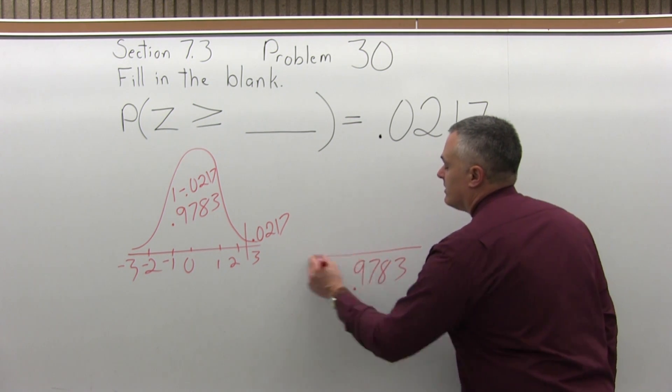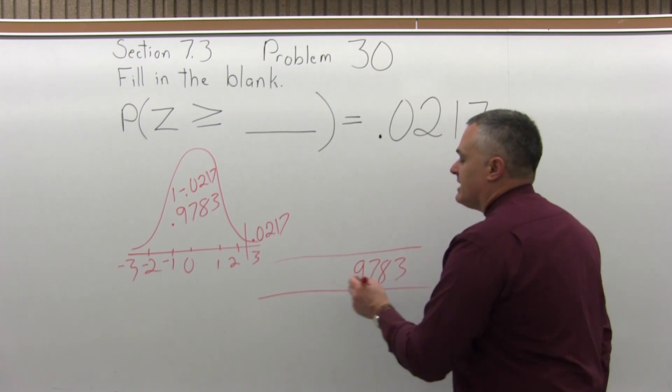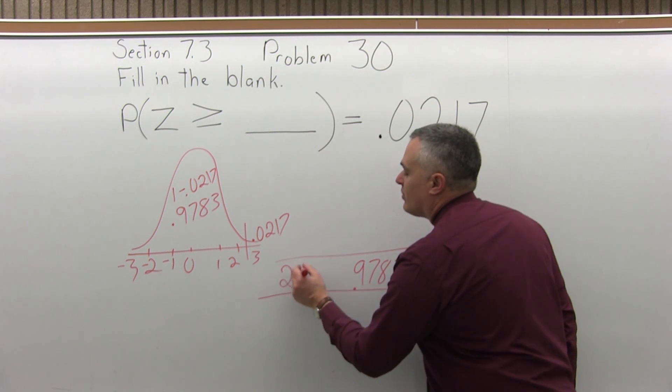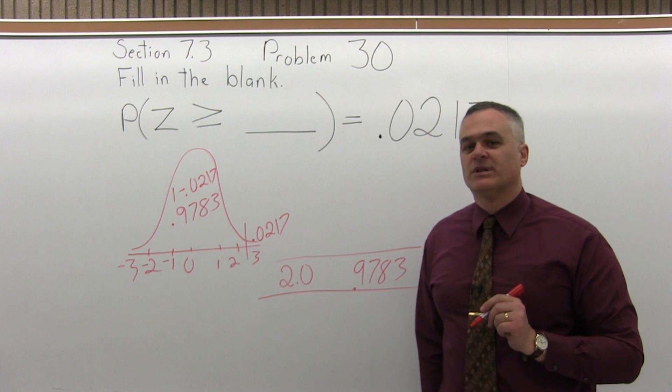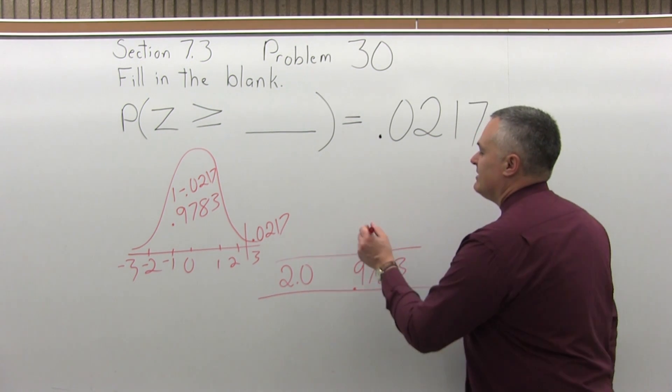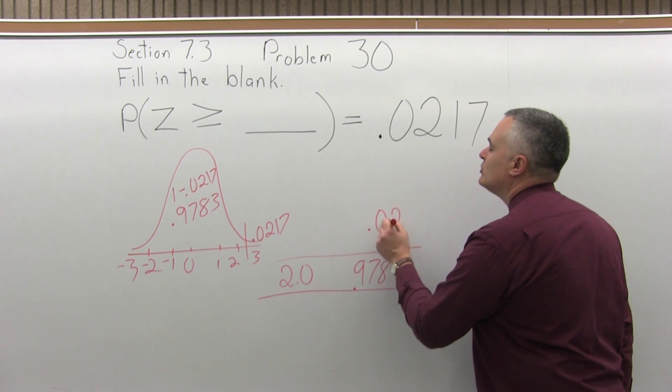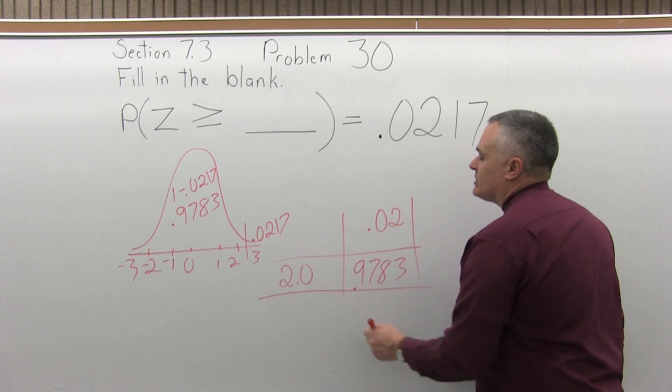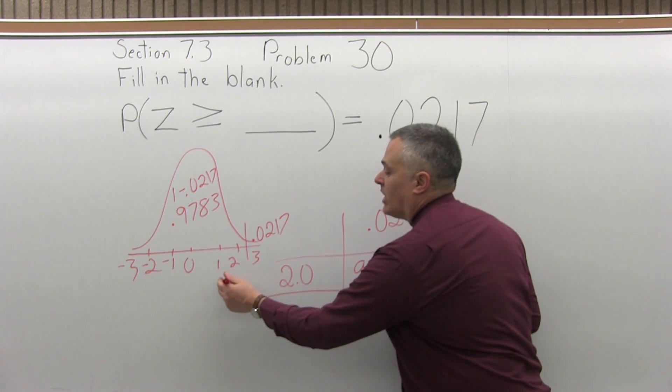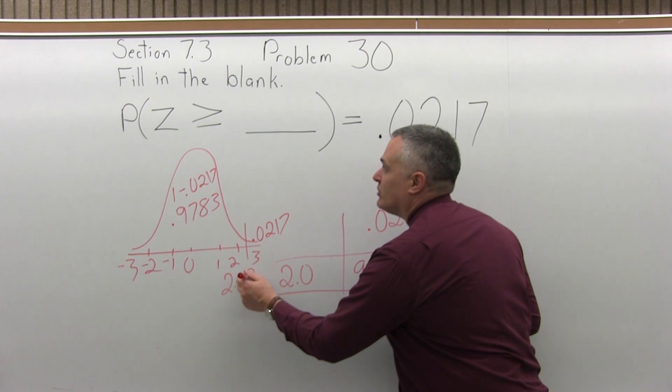When you do, the row that it's in you'll see is the 2.0 row, positive 2.0. It's in the .02 column. That's telling me the number I must have looked up was 2.02.